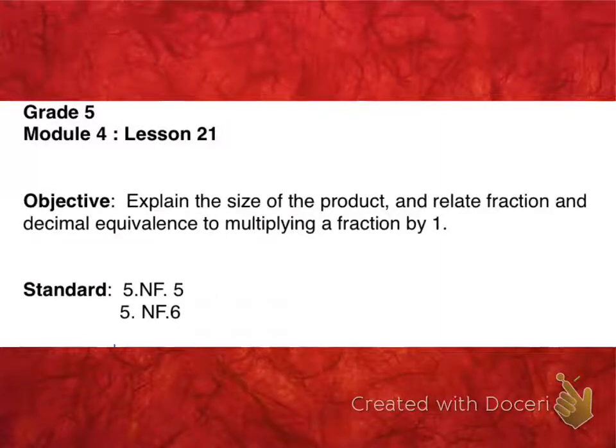This is Grade 5, Module 4, Lesson 21. The objective is to explain the size of the product and relate fraction and decimal equivalents to multiplying a fraction by 1. This lesson covers Standard 5.NF.5 and 5.NF.6.